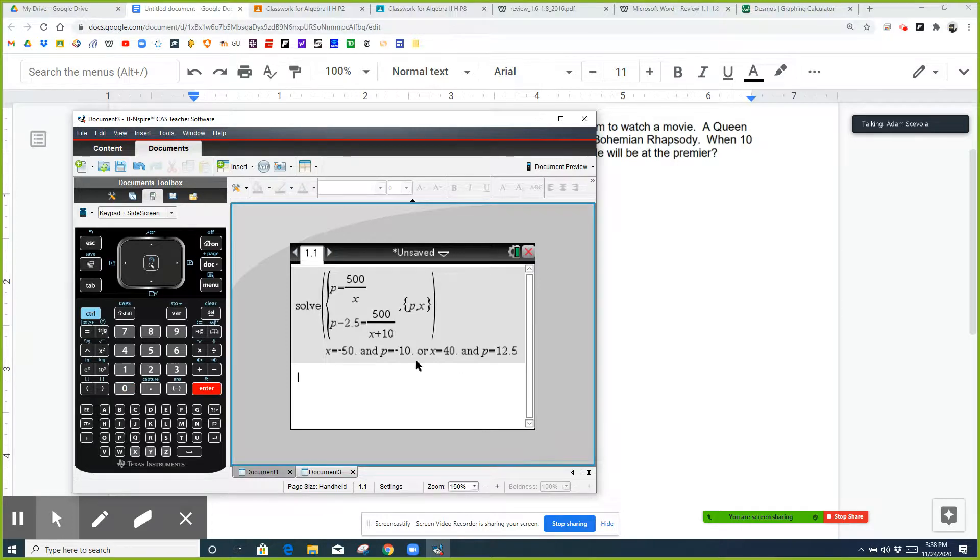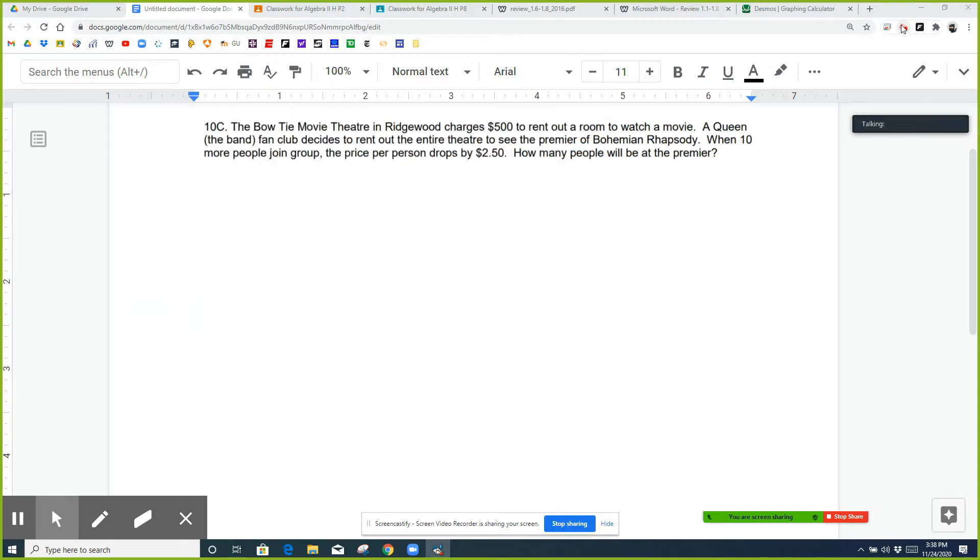And then, so you get that there was originally 40 people and it costs $12.50 per person. So that means when you add 10, so when it's 50 people, it costs $10 per person.